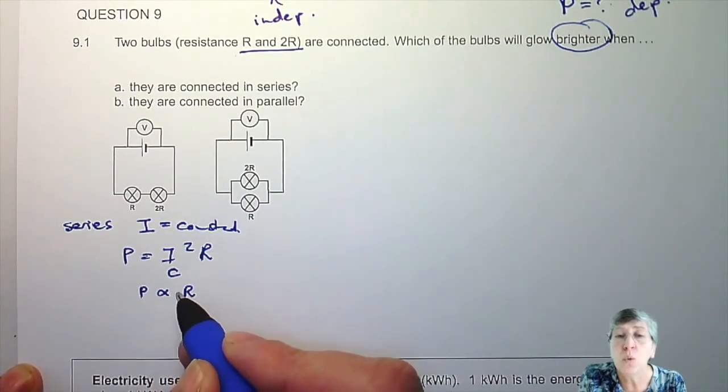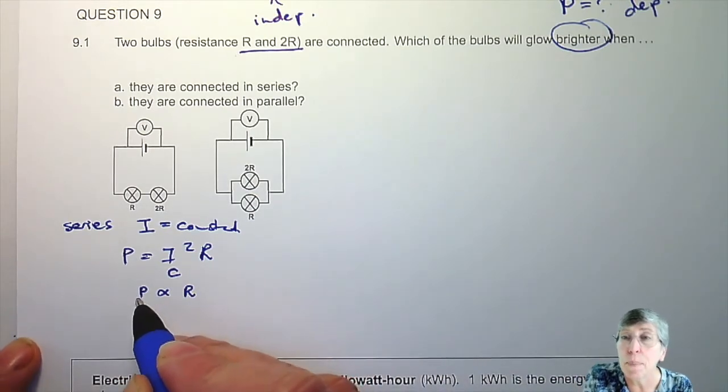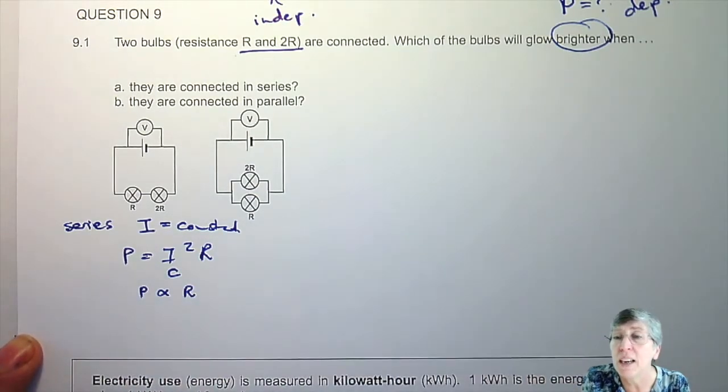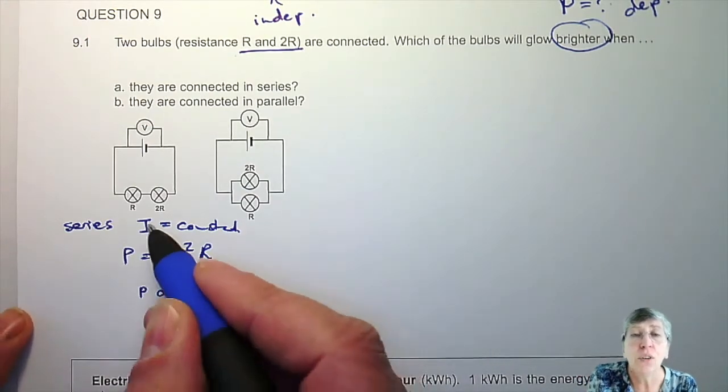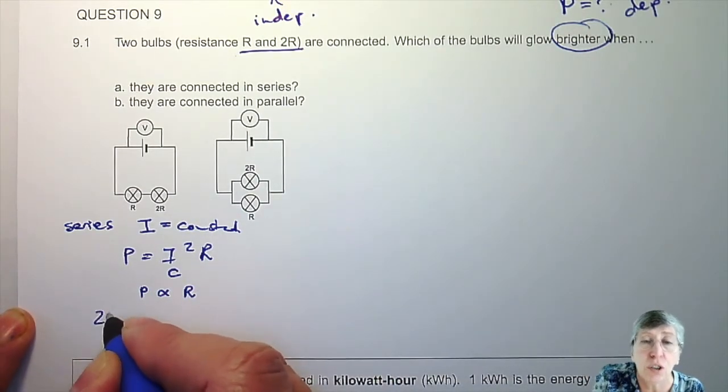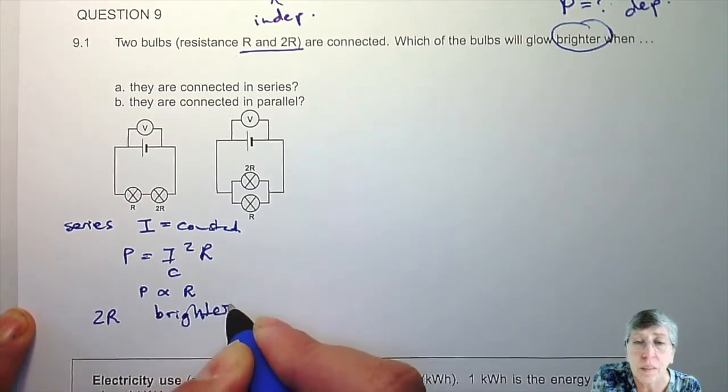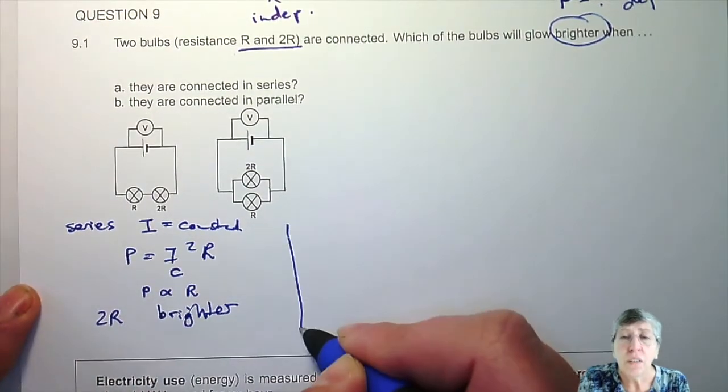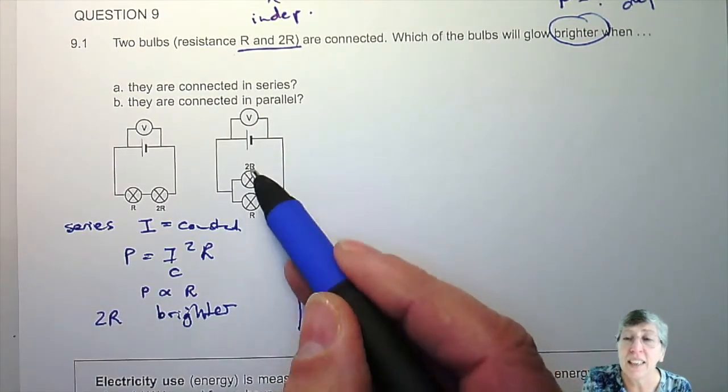This one is constant. So if this one doubles then the whole right hand side double and then the left hand side will double as well. They will increase or decrease with the same factor. So they're directly proportional. Which tells me the one with the bigger resistance will be the one with the bigger power and that means it'll be emitting more light energy per second. It will be brighter. So who's got the bigger resistor? 2R has got the bigger resistor. So 2R will now be brighter.